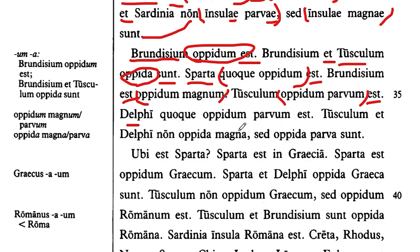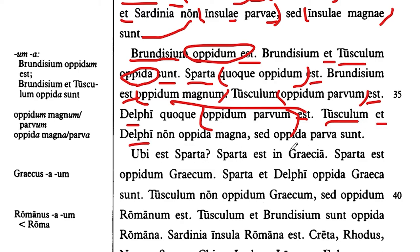Delphi quoque — Delphi is also a small city. Tusculum and Delphi are not large cities, but are small cities.